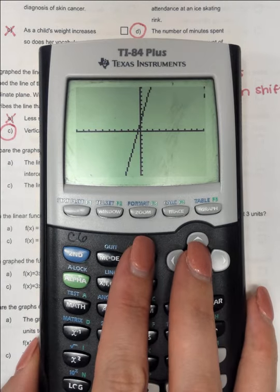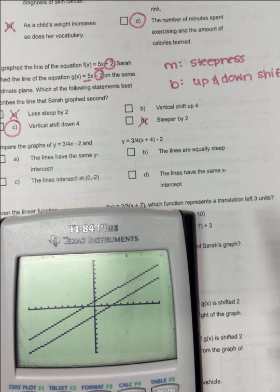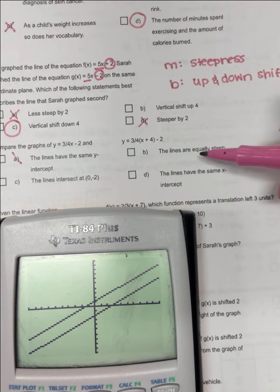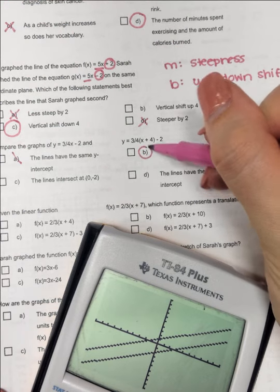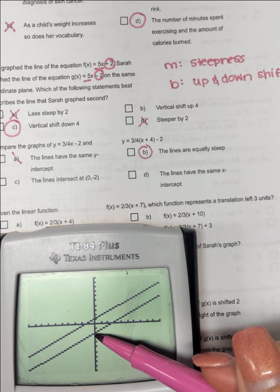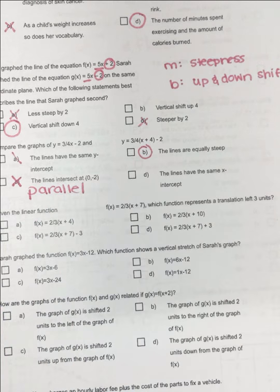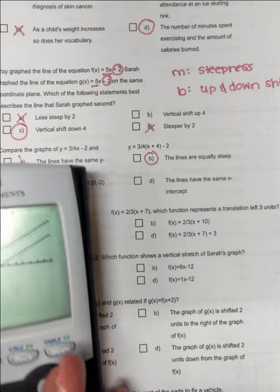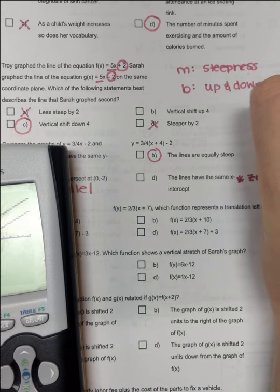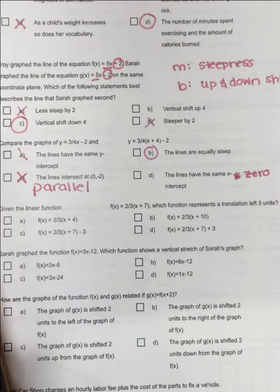Compare the graphs of y equals 3 fourths x minus 2 and 3 fourths x plus 4. So, I'm going to plug them in my calculator, 3 fourths x minus 2, and then 3 fourths parentheses x plus 4 parentheses minus 2. So, I've got them both entered in, and let's look at them. So, there's the original, there's the new one. So, it shifted up. The lines have the same y-intercept. Here's a y-intercept, here's a y-intercept. No. The lines are equally steep. Yeah, those are parallel. Those are just as steep. The lines intersect at 0, negative 2. No, there's no intersection at all because those two lines are parallel. So, this one we know is not true because they're parallel. And they have the same x-intercept. Here's an x-intercept, here's an x-intercept. X-intercept, another name is zero. So, do those have the same zero? No, they do not. So, the answer is B.